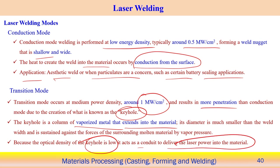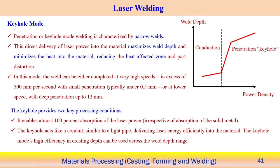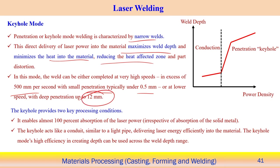In keyhole mode, penetration is very high, characterized by a very narrow weld and direct delivery of laser power into the material. This maximizes weld depth of penetration and minimizes heat affected zone and distortion. The laser can move at very high speed in keyhole mode — for example, at high speed penetration can be 0.5 mm, while at lower speed it can reach up to 12 mm depth of penetration.